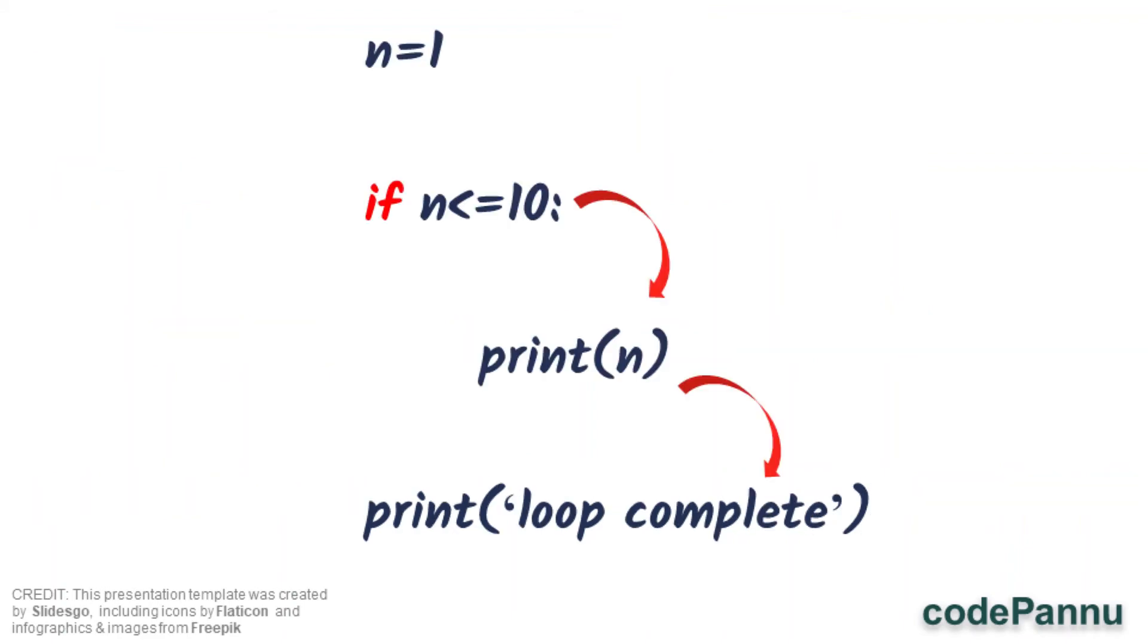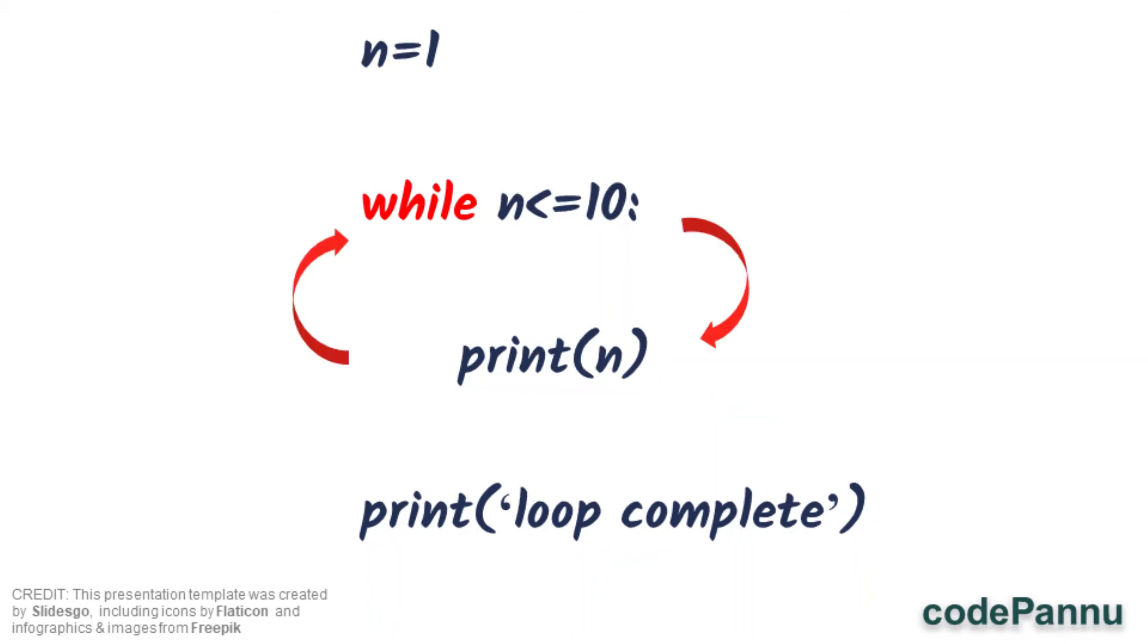But after printing this line, if we are using if statement, Python will go to the next print statement and print this statement that if's condition was checked successfully. But now, after printing the statement, because we are using while, it will not go to the next statement but it will go back to this while statement. That is why it is called a loop because it goes back to the while statement.